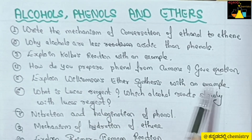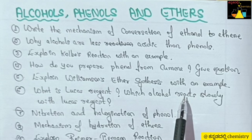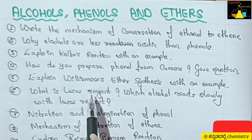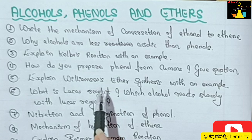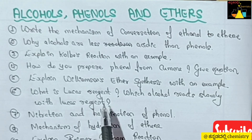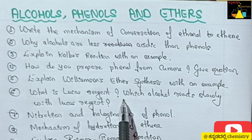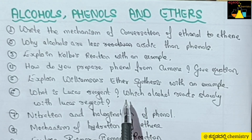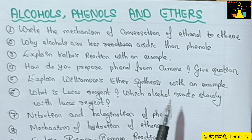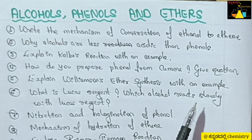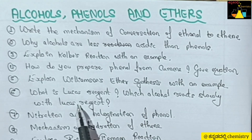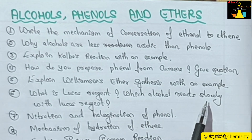Explain Williamson's ether synthesis with an example. Next, what is Lucas reagent? Lucas reagent is a mixture of concentrated HCl and anhydrous zinc chloride solution. Primary alcohols react slowly with Lucas reagent. Secondary alcohols form turbidity or cloudiness within 5 minutes. Tertiary alcohols react immediately with Lucas reagent.